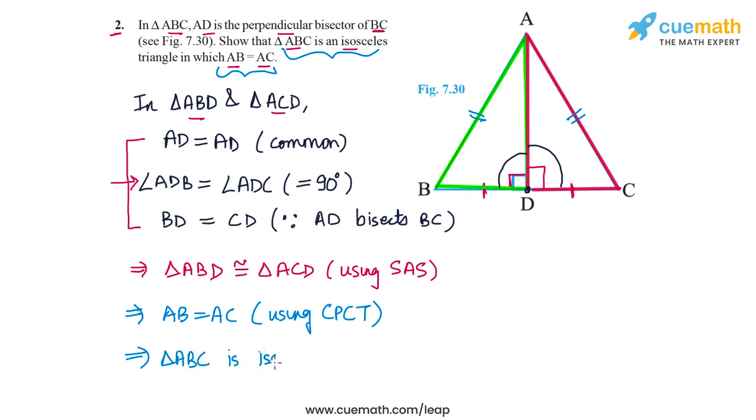So that completes our proof. All we did was compare triangles ABD and ACD and prove that the two triangles are congruent using the SAS congruence criterion.